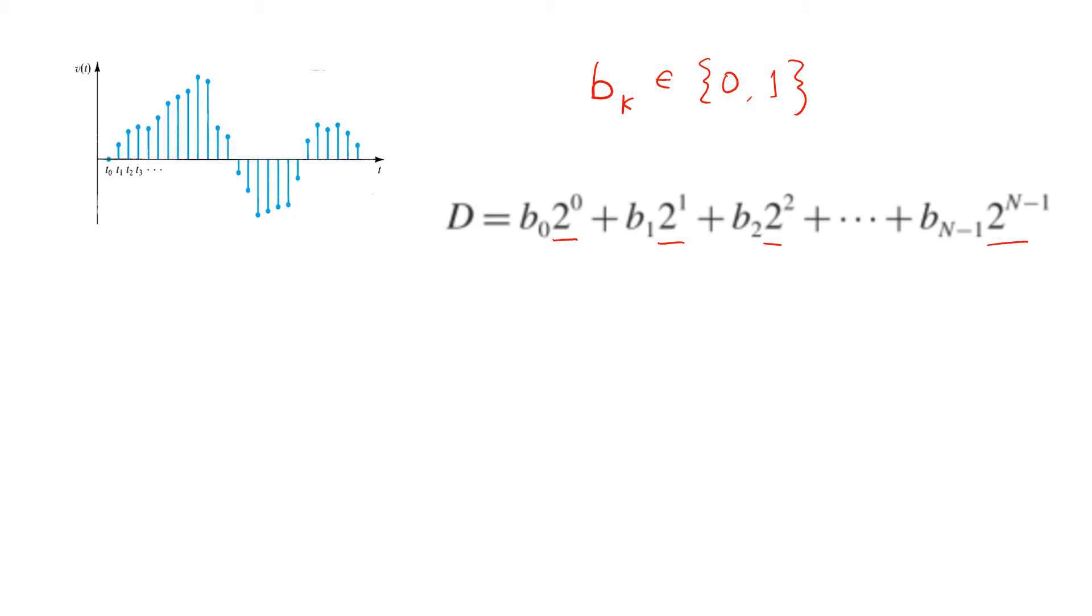So that the number D can take on any value, any integer value in this case, from 0 all the way up to 2 to the n minus 1 or 2 to the n different values for n bits.